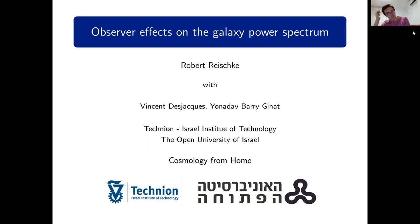Let's come to the talk. I would like to present you a project I've been working on quite recently with Vincent Desjacques and Yonatan Barry Ginat. It's about observer effects on the galaxy power spectrum, the effect of our particular position in the universe and the values of the fields at our position and how it affects the observed statistics in the sky.